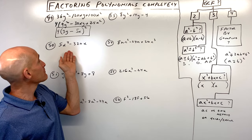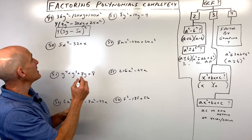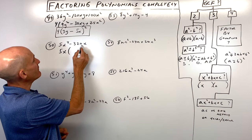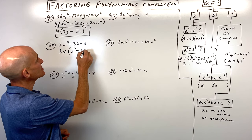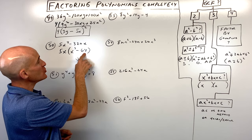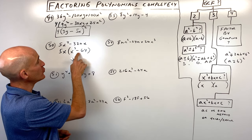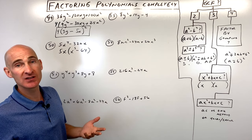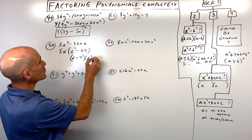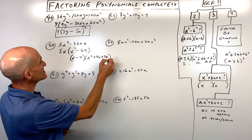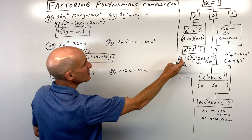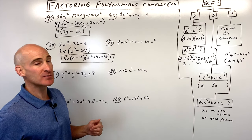Number fifty, 5x to the 4th minus 320x. We're halfway. Factor out 5x to get 5x times x cubed minus 64. This is a difference of two cubes since 64 is 4 cubed. Using the formula: x minus 4 times x squared plus 4x plus 16, then bring down that 5x. Using same, opposite, always positive.